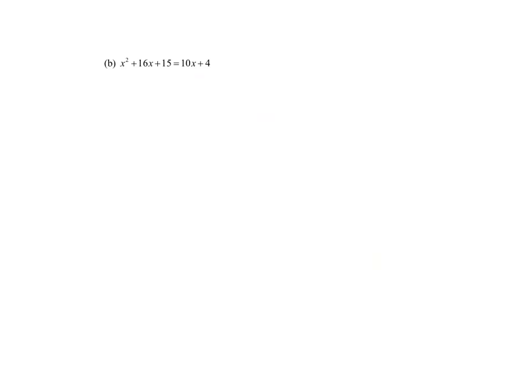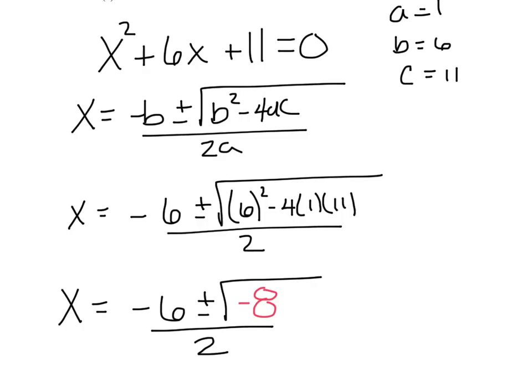Our next example b, same thing, I want you to find all the solutions in a plus bi form. So they're telling us quadratic. Again, pause it, see what you get. Set it equal to 0 and let's go from there. Well hopefully your work matched with mine. I had x squared plus 6x plus 11 equals 0. Pulled out my a, b, and c, plugged them in my formula.